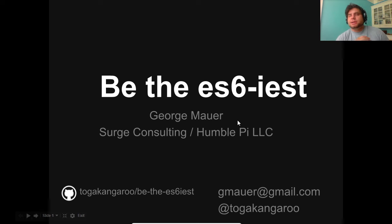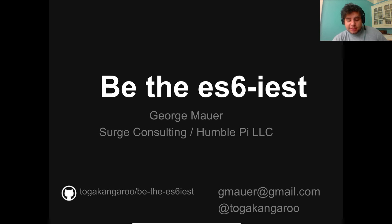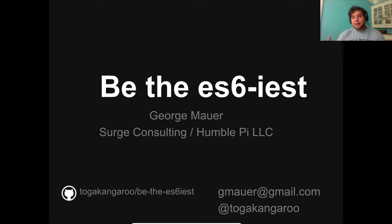I want to start by talking about the history of JavaScript and the web. The long and short of it is that JavaScript was designed in 10 days, back in 1993 when Internet Explorer and Netscape Navigator were vying for supremacy. They realized they needed a programming language — something that would run and rearrange HTML and CSS on the page to make a little calendar pop up. The race was on.